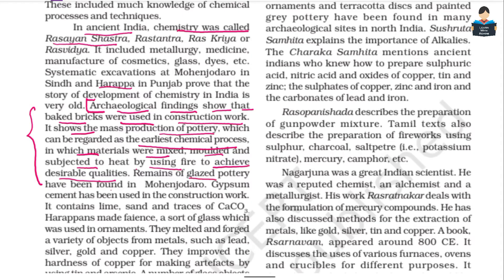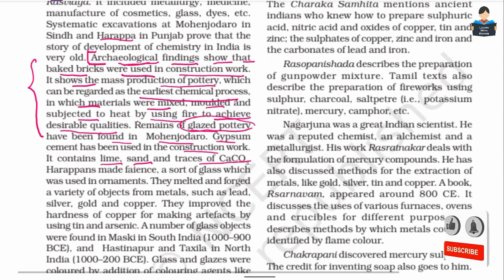Remains of glazed pottery have been found in Mohenjo-daro. Gypsum cement has been used in construction work, with lime, sand, and traces of calcium carbonate (CaCO3). We know CaCO3 is calcium carbonate.